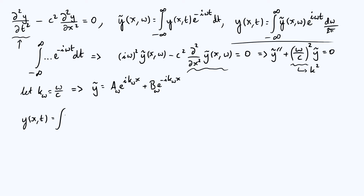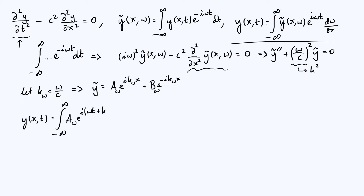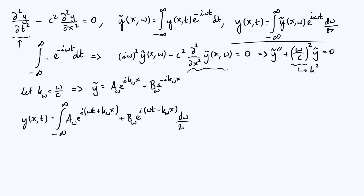So y of x and t — the inverse Fourier transform was the expression at the top right. We need to integrate over all values of omega from minus infinity to infinity. Taking that expression for y-tilde and multiplying the whole thing by e to the i omega t, as required by the inverse Fourier transform, we can combine the complex exponentials: the first term gives a(omega) times e to the i(omega t plus k_omega x), and the second term gives b(omega) times e to the i(omega t minus k_omega x). Then we integrate with respect to omega and divide by 2 pi.